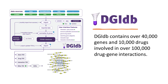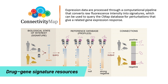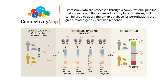The Drug Gene Interaction Database, or DGIDB, contains over 40,000 genes and 10,000 drugs involved in over 100,000 drug-gene interactions. The goal of DGIDB is to annotate genes of interest with respect to known drug-gene interactions and potential drugability. Users can enter a list of genes to retrieve all known or potentially druggable genes in that list. Results can be filtered by source, interaction type, or gene category.